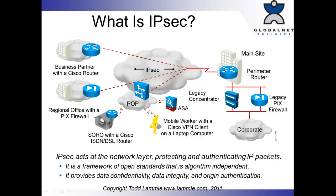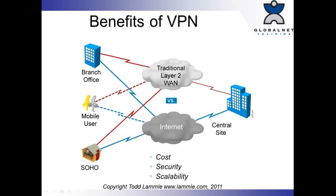IPSec is a framework of open standards that is algorithm independent. It's not one protocol in itself — it's a huge framework providing data confidentiality, data integrity, and authentication. The benefits of VPN are cost savings — we don't have to have point-to-point communications, we can have point-to-multipoint. We get scalability: we can add or delete mobile users, branches, small offices, and home offices easily without changing a huge part of the network. And it gives us great security if configured correctly — remember, by default it won't, so we have to configure this correctly.